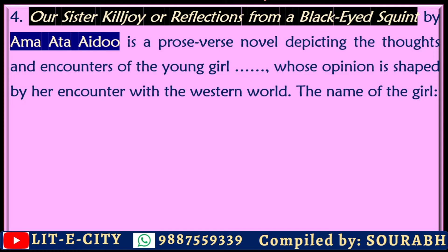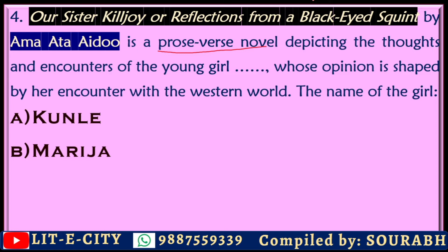'Our Sister Killjoy: Reflections from a Black-Eyed Squint' by Ama Ata Aidoo is a prose-verse novel depicting the thoughts and encounters of a young girl whose opinions are shaped by her encounter with the Western world. What is the name of the protagonist? Is it Kunli, Maria, Sissi, or Amah? The correct answer is Sissi. This work by the Ghanaian education minister reflects the typical conflict between a Black girl and European white people.